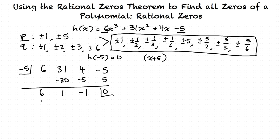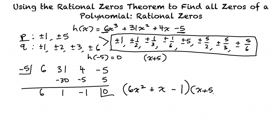The quotient we have here is brought down by one power, so it starts with x squared. We have 6x squared plus x — because it's plus 1x — minus 1. So if we multiply this by x plus 5, we would be left with 6x cubed plus 31x squared plus 4x minus 5.